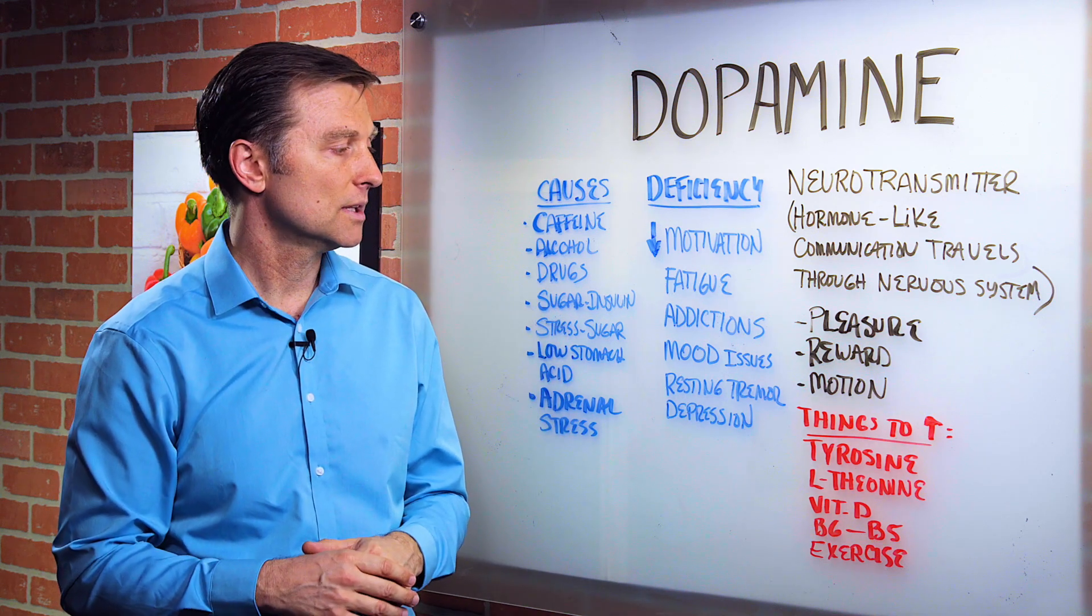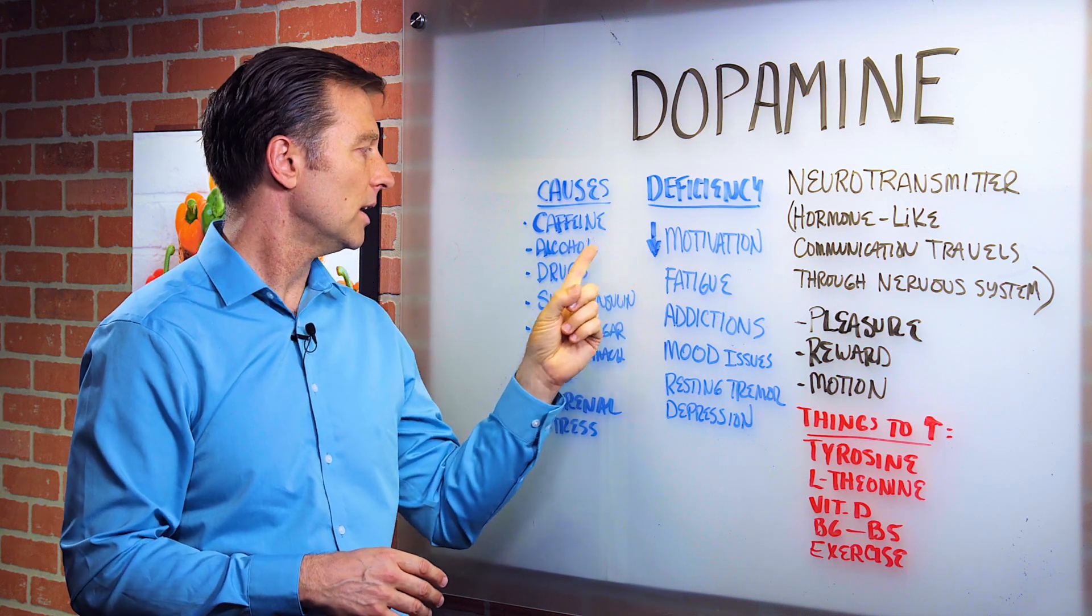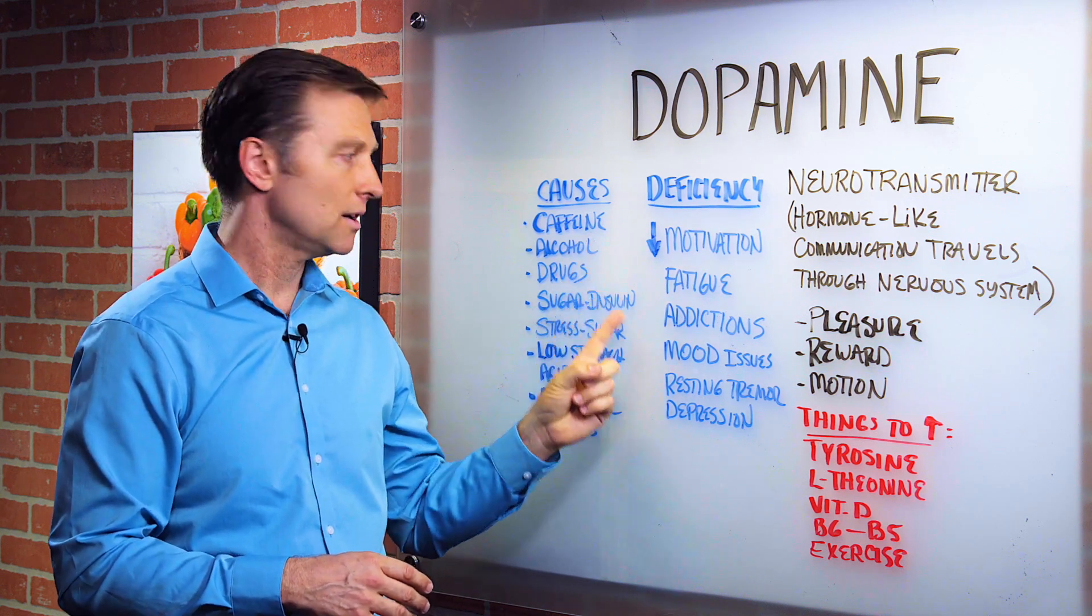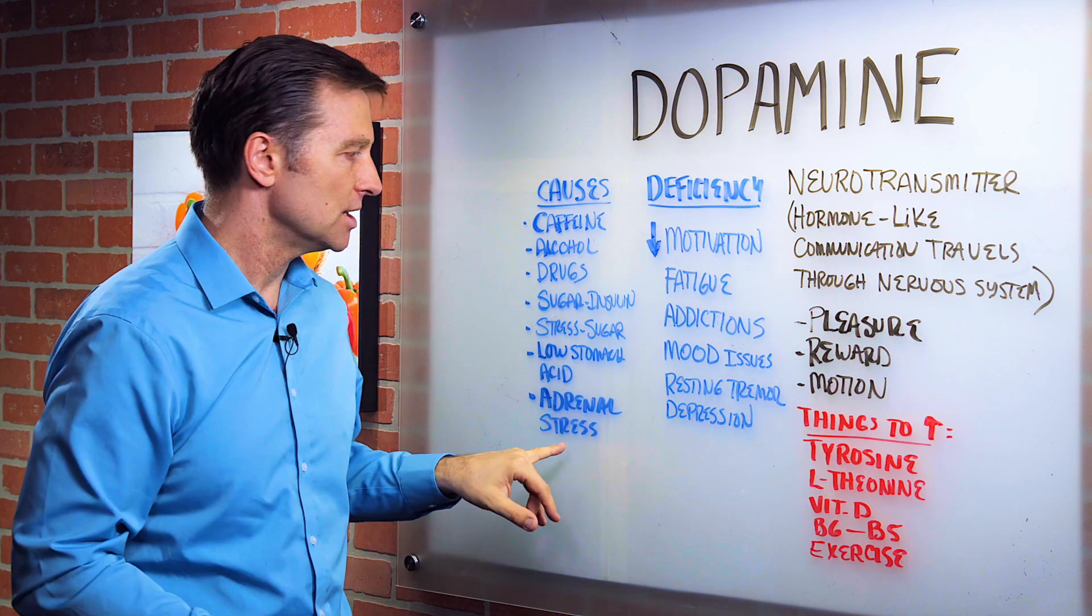So here's some things that you can do. Of course, don't consume as much caffeine or alcohol. Just get off the drugs, get off the sugar, cut the stress down, increase the acid, improve the adrenal.